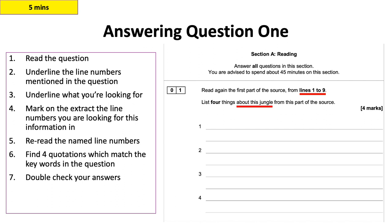What you need to do is follow the steps on the slide. You read the question and underline the line numbers mentioned in it. This is really important because the exam board are quite picky — if you give them something from the wrong lines they won't give you the mark. It's really specific that you are getting it from those lines. Underline what you're looking for. Here you're looking for four things about the jungle. Then mark on the extract the line numbers you are finding this information from. Literally just copy across the quotations.